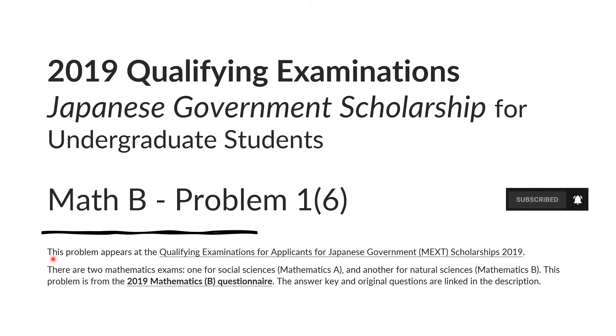Please hit subscribe. This problem appears at the Qualifying Examinations for Applicants for Japanese Government or MEXT Scholarships 2019. There are two mathematics exams, one for Social Sciences Mathematics A and another for Natural Sciences Mathematics B. This problem is from the 2019 Mathematics B Questionnaire. The answer key and the original questions are linked in the description.